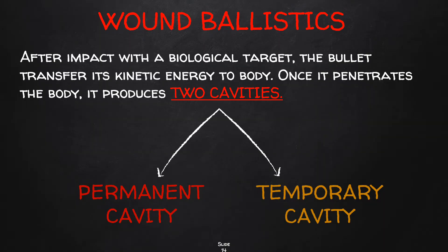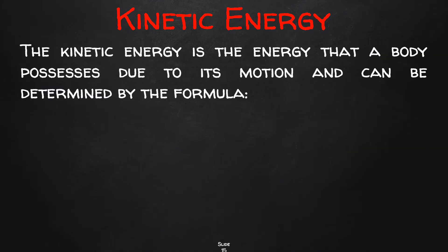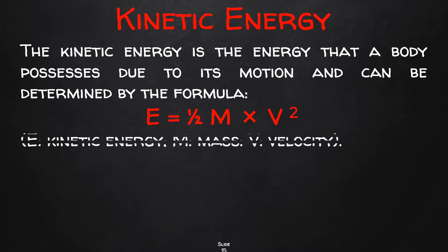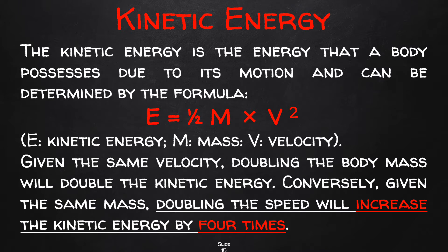After impact with a biological target, the bullet enters the body and releases its energy to surrounding tissues, leading to the development of two cavities: the permanent cavity and the temporary cavity. These cavities are critical factors in determining the severity of a gunshot wound. Kinetic energy — determined by the formula KE = ½mv² — means that given the same velocity, doubling the mass doubles kinetic energy, but given the same mass, doubling the speed increases kinetic energy by four times. Therefore, velocity is one of the primary factors in determining wound severity.